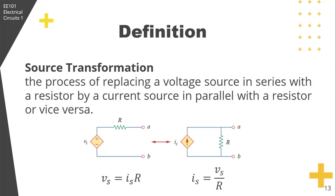Note the direction of the current source. The direction of the current source is from the negative terminal to the positive terminal of the voltage source. So when you transform, IS is just equal to VS over R.